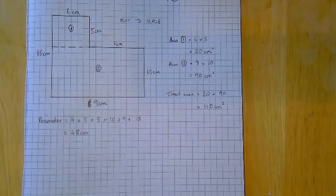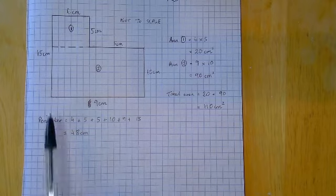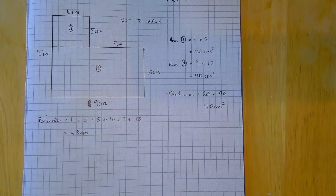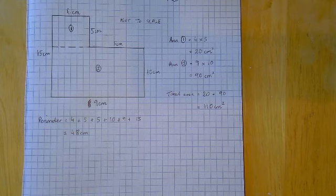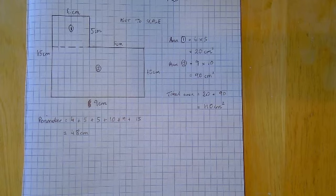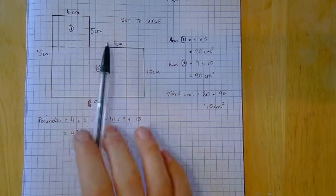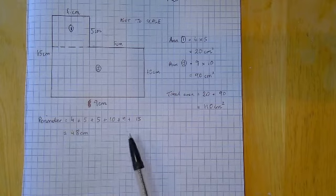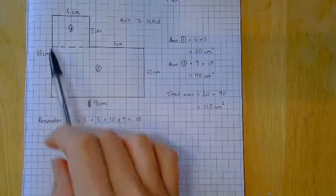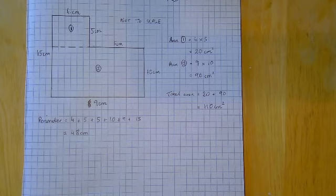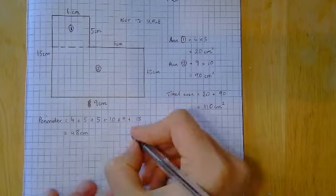48 centimetres. So the important steps, you might want to just pause maybe and write down some steps. So maybe step 1 would be split your shape into some rectangles. Sometimes, most of the time, it would be two rectangles. Sometimes, it might be three rectangles. So split it into rectangles and number them. And then maybe step 2 would be find the area of each rectangle. Step 3, add them all together. Now for the perimeter, step 1 is probably fill in the missing sides. Although that's sometimes useful for area as well. And then step 2, you'll have to add up all of your sides.